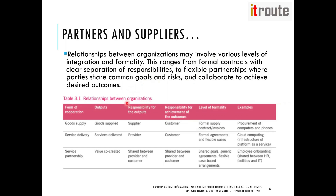Let's look at the different forms of cooperation. In a goods supply relationship, the supplier is responsible for output and the customer is responsible for the outcome, since the customer defines the requirements. The level of formality is a formal supply contract with invoices. An example is the procurement of computers and phones — where your company purchases computers, phones, laptops, and tablets from another vendor under a formal agreement.